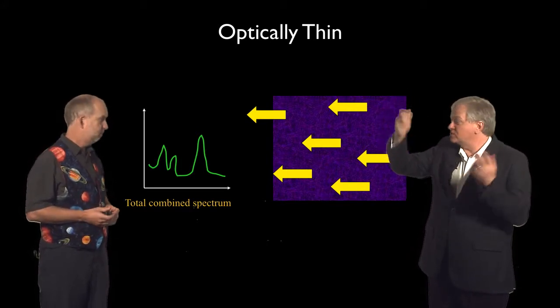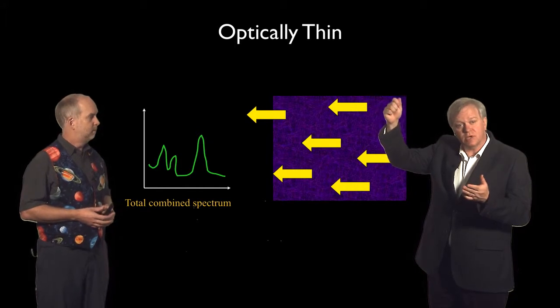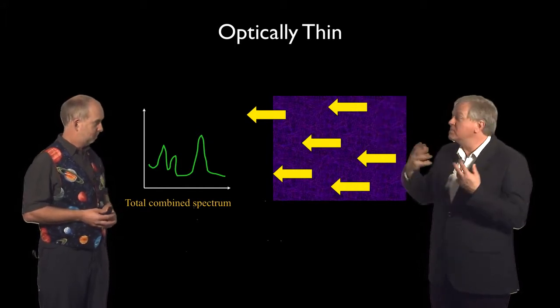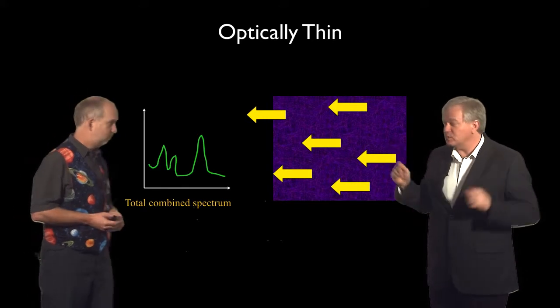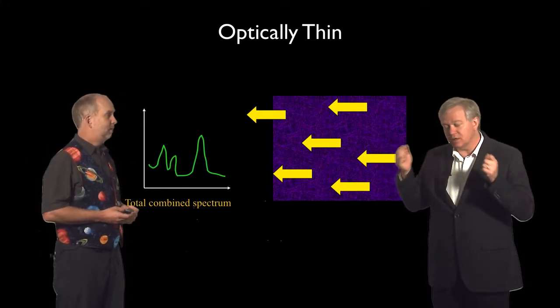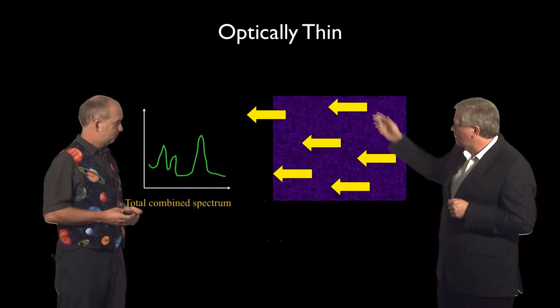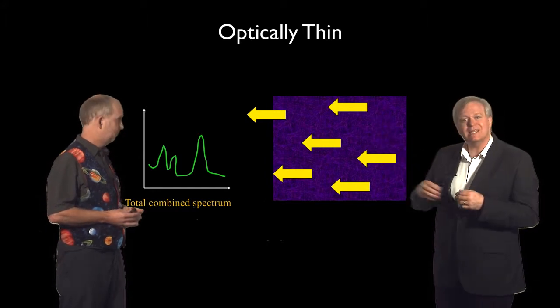Then, just due to the laws of probability of an atom, they're going to go down to 2, and when they do they'll emit a photon at that H alpha, as we like to call it, the red wavelength. So every time that happens you're going to get emission.